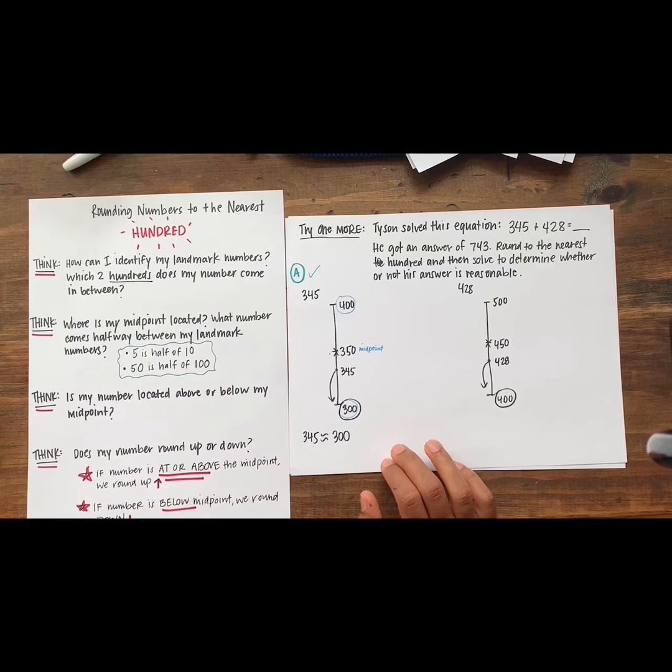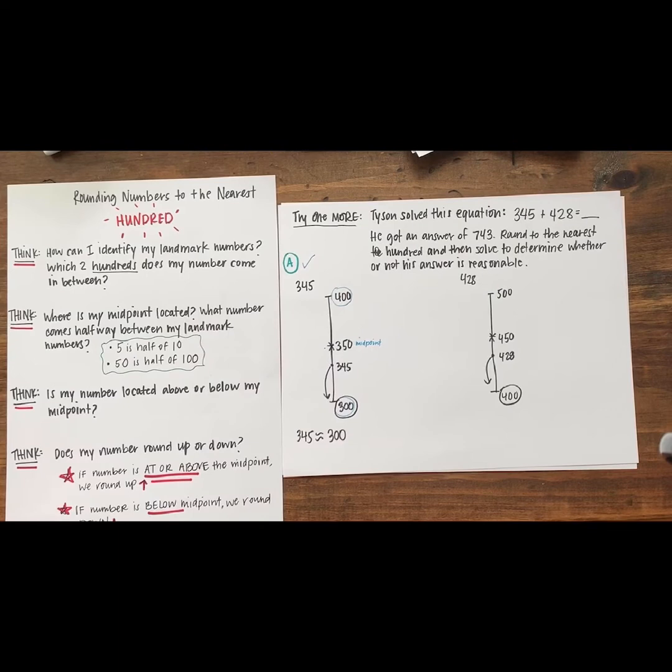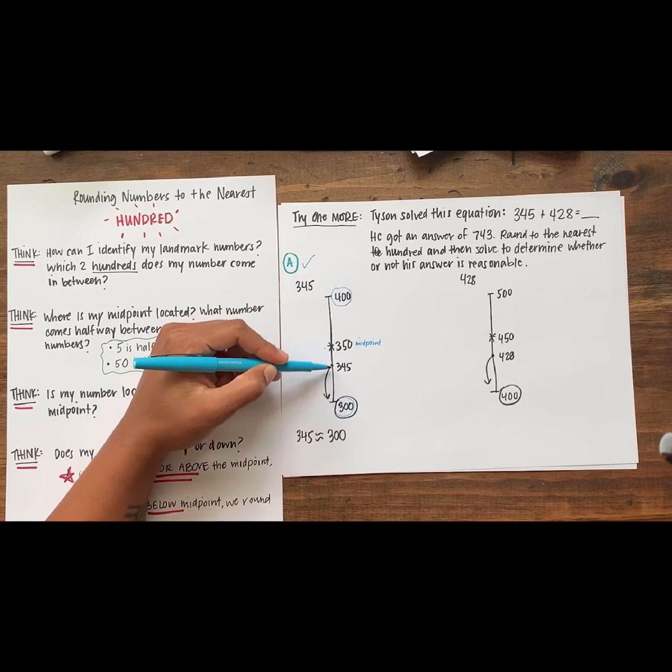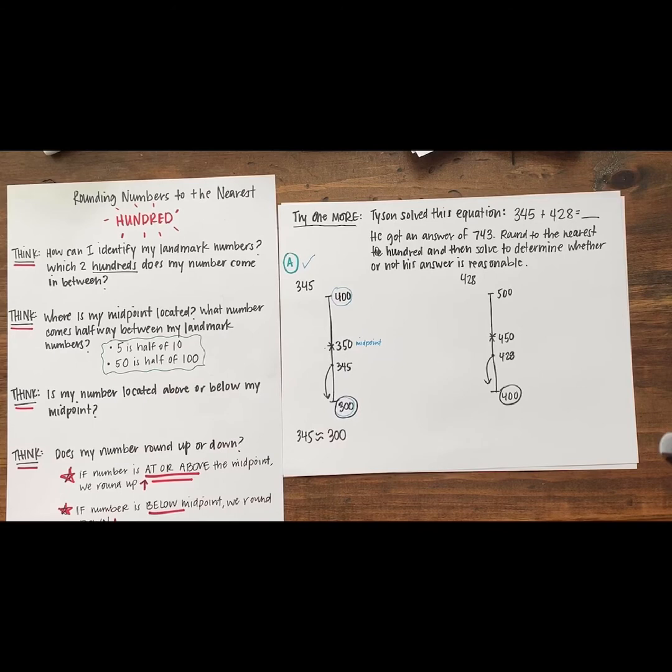Why did we round this number down to 300? Say your answer out loud. Yes, that's right. 345 rounds down to 300 because 345 is less than our midpoint of 350. We know if our number is below the midpoint, we round down. Nice work.